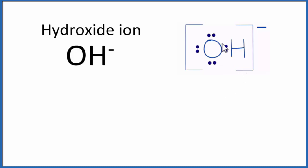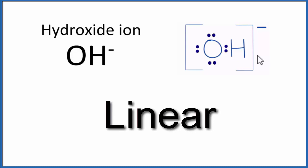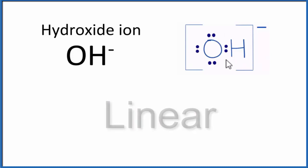Because we only have these two atoms, there's really only one way they can orient each other, and that's with a linear molecular geometry. Let's see what that'll look like and what these lone pairs will do.